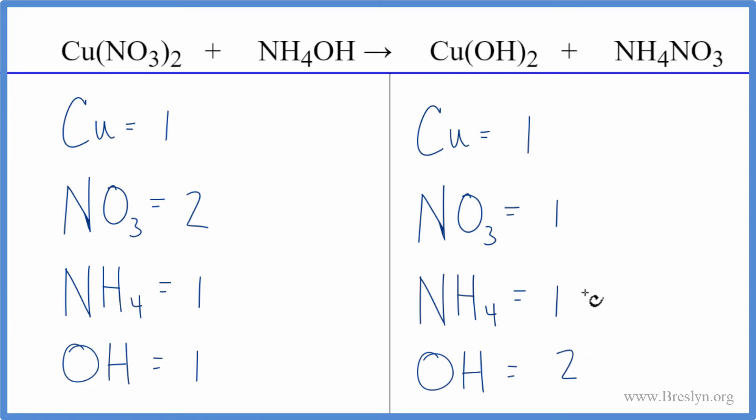Let's balance the nitrates first. We have two here and one here. Put a coefficient of two in front of the ammonium nitrate. Now we have one nitrate times two, that gives us two of those—those are balanced. And one ammonium, the NH4, times two gives us two of those.